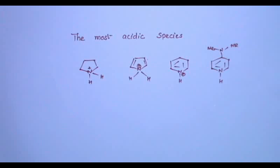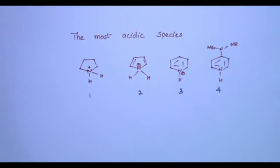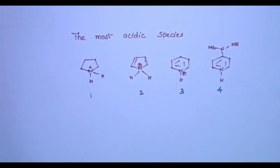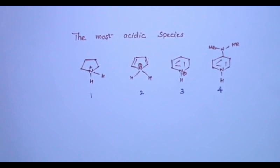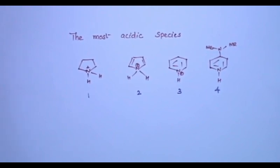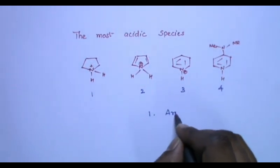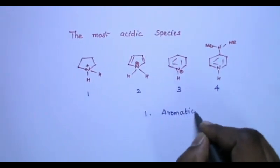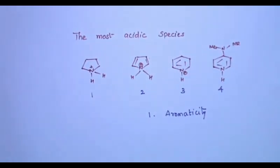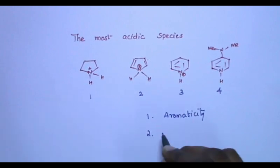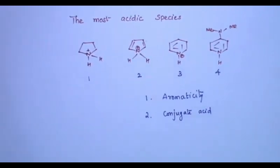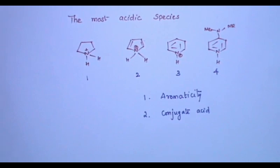In this video, we are going to solve a problem on acidity of protons. The question is: the most acidic species among the following. They are given four options — which one will be highly acidic? I am going to explain this on two concepts: the first one based on aromaticity, and the second one based on conjugate acid. Acidity refers to the ability to donate a proton. Among these four, which one can donate a proton easily? That will be highly acidic.